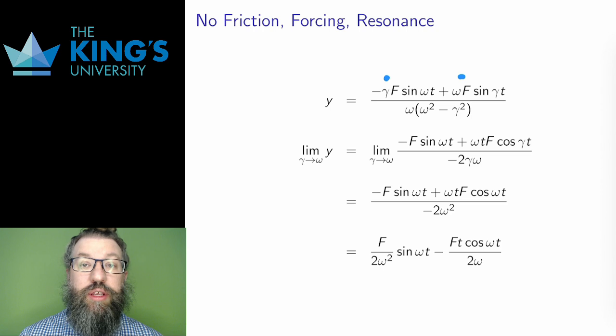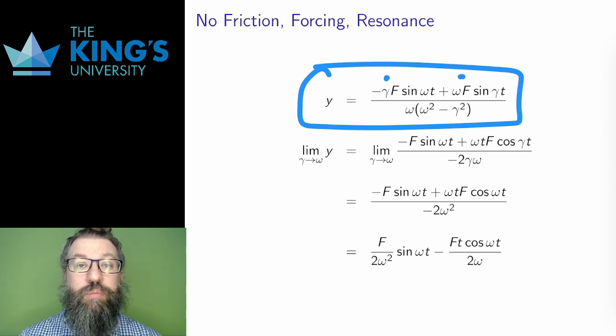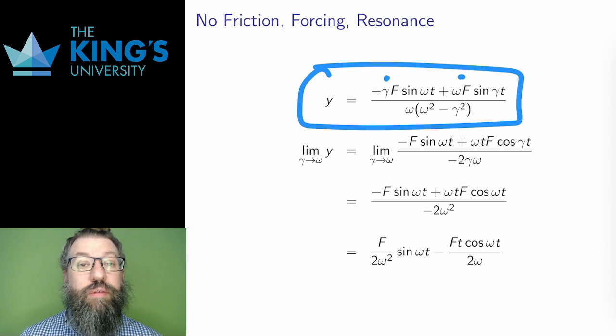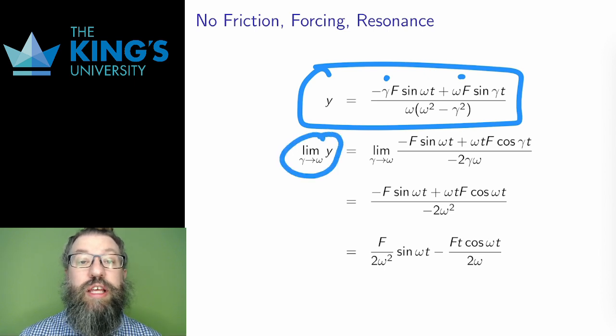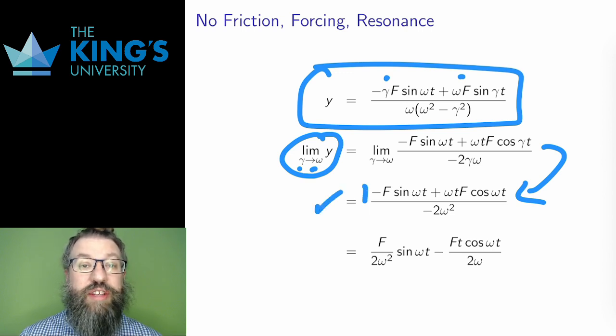This was the situation when the natural frequency and the forcing frequency were different. If they are the same, the steps in the previous solution don't work because of division by zero. I could re-solve the system with different techniques, but I can also take the limit of this as the forcing frequency approaches the natural frequency. I can do this as a L'Hopital's limit with gamma being the variable. After L'Hopital's, there is no more division by zero, so I can just evaluate, and the result is this expression.